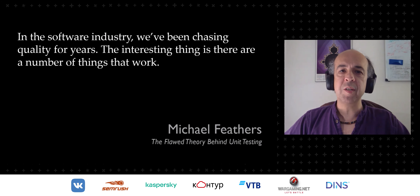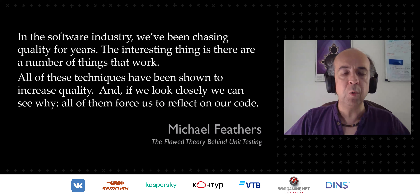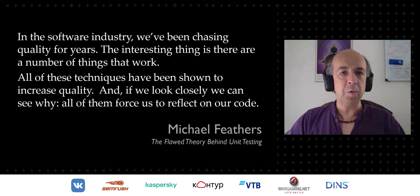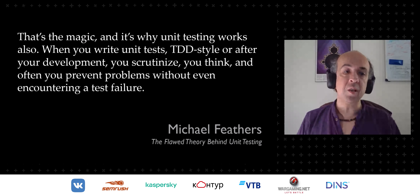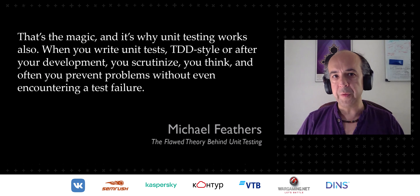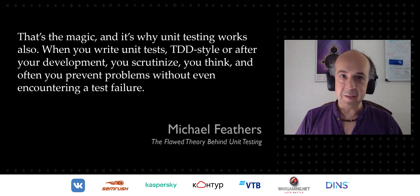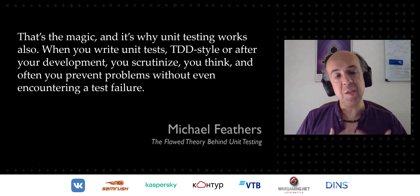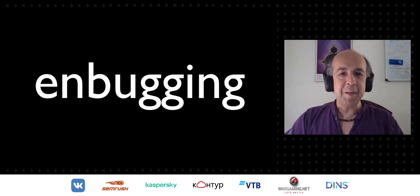Michael Feathers made a parallel observation in a blog post: 'The Flawed Theory Behind Unit Testing.' The flawed theory is that we unit test to find bugs, to just make sure things work. He says no — in the software industry we've been chasing quality for years, and there are a number of techniques that have been shown to increase quality. All of them force us to reflect on our code; they're all about slowing down, making you think. Software development is applied thought, applied learning, applied knowledge. That's the magic — and it's why unit testing works.